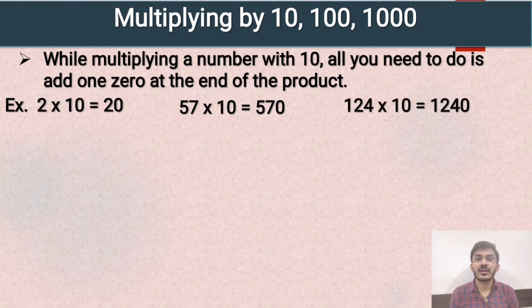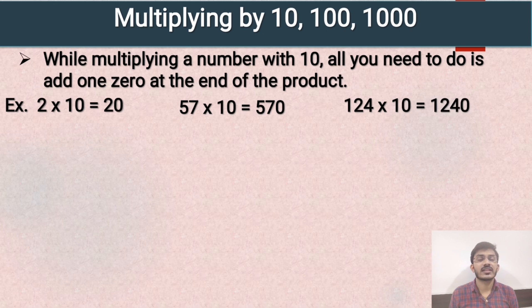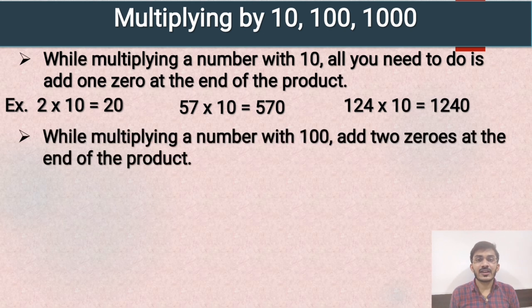Third example: 124 multiplied by 10. So 124 times 1 is equal to 124, and we add one zero at the end of the product. So the answer will be 1240.